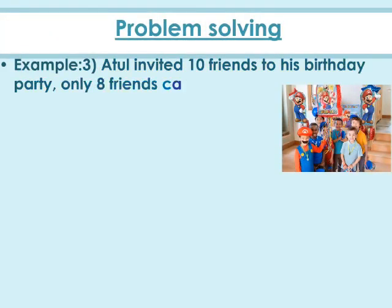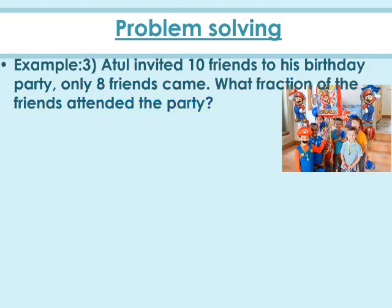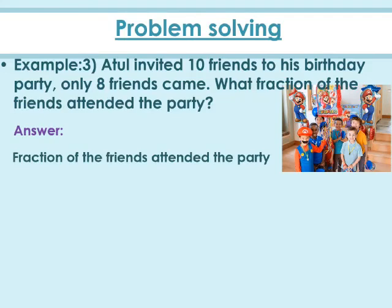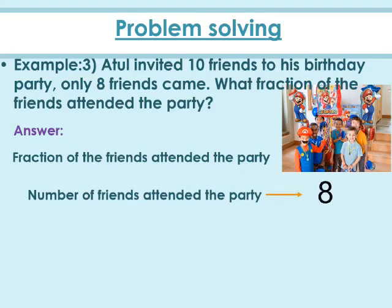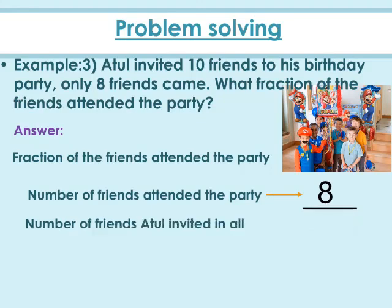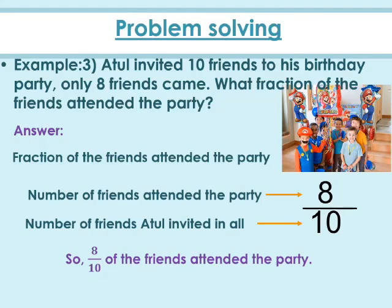Example 3: Atul invited 10 friends to his birthday party and only 8 friends came. What fraction of the friends attended the party? Atul invited 10 friends and 8 attended. The fraction is number of friends who attended, that is 8, as the numerator, and total friends invited, that is 10, as the denominator — so the fraction is 8 by 10. Thus, 8 tenths of the friends attended the party.